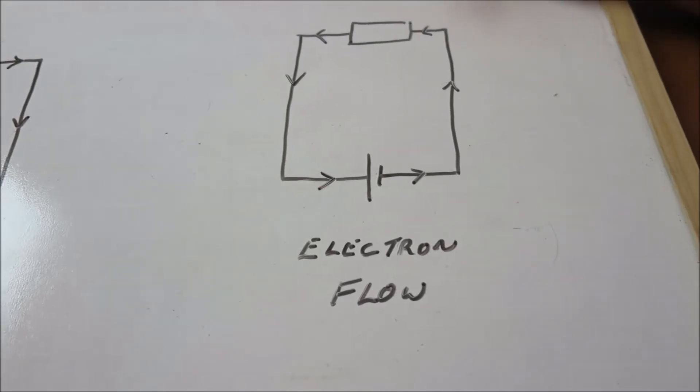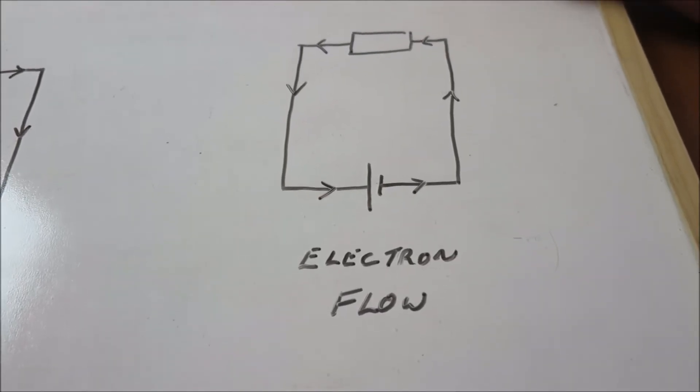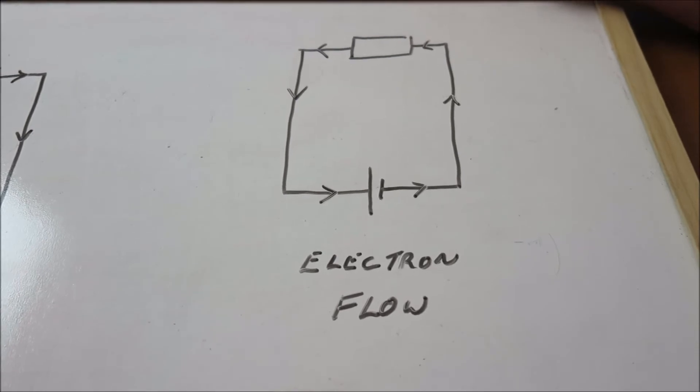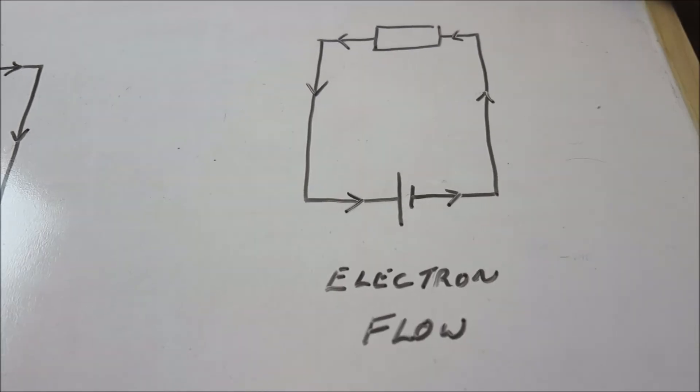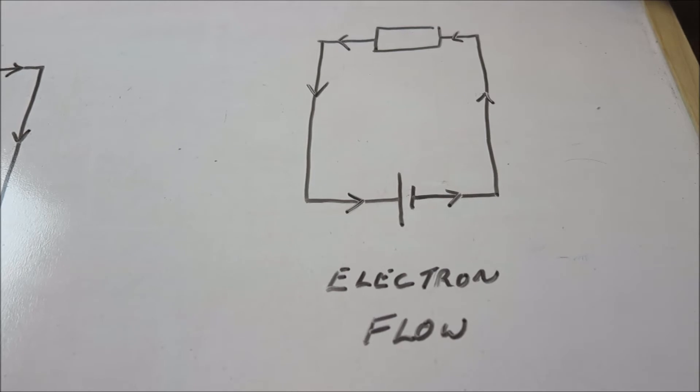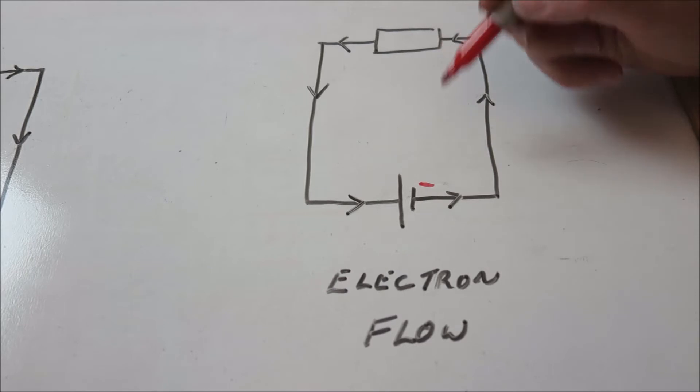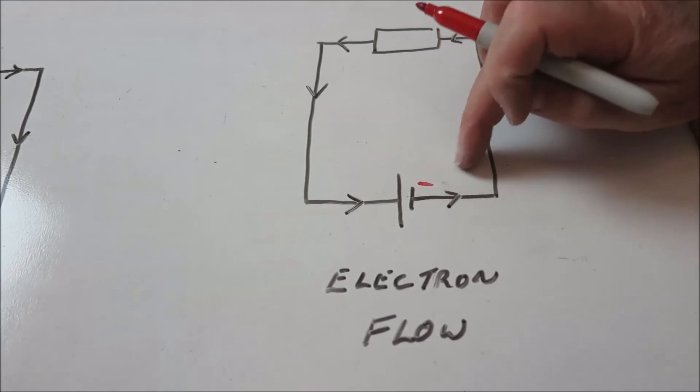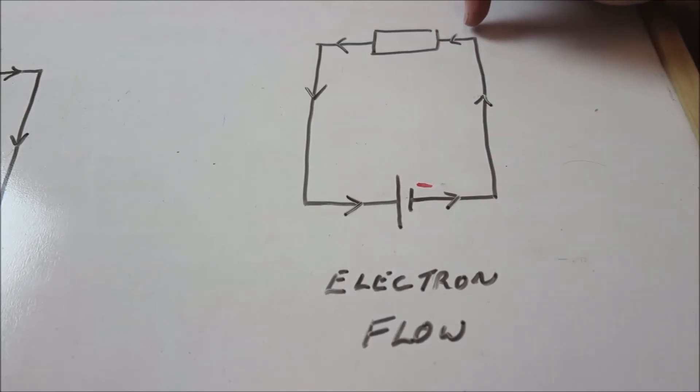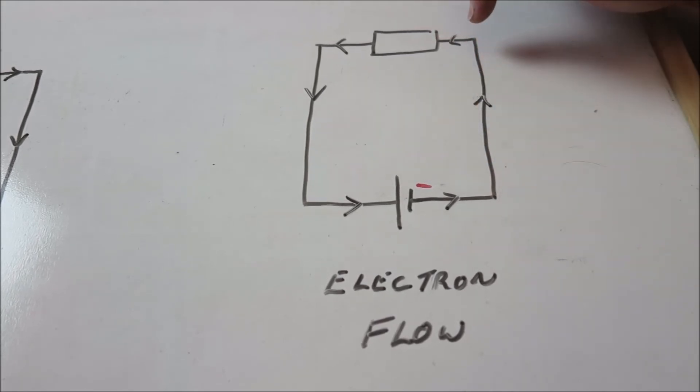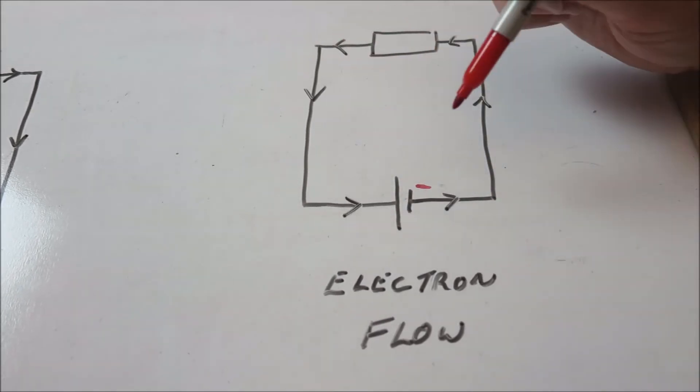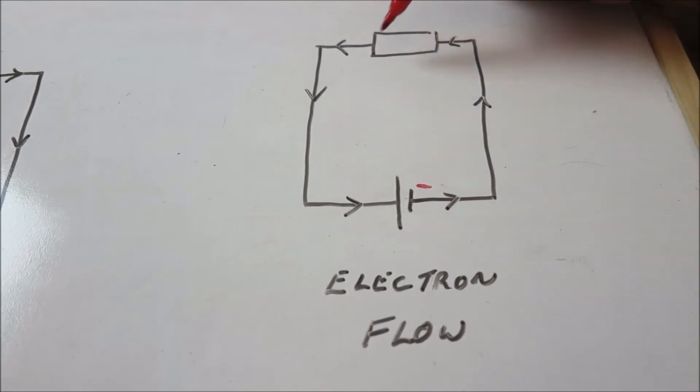But due to investigations into particle physics and atoms and things like that, it was discovered that the electron is actually negatively charged. So with that in mind, the electrons would then flow actually from negative through to positive. That's the actual electron flow.